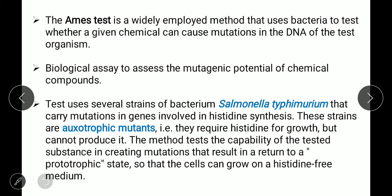The procedure for the Ames test was described by Bruce Ames and his colleagues. It is a widely employed method that uses bacteria to test whether a given chemical can cause mutations in the DNA of a test organism. It is a biological assay to assess the mutagenic potential of chemical compounds. The bacteria used is Salmonella typhimurium — a gram-negative, rod-shaped, pathogenic strain of Salmonella species.